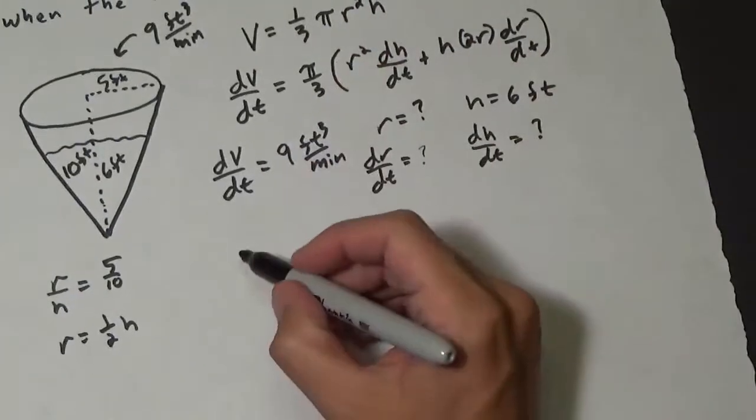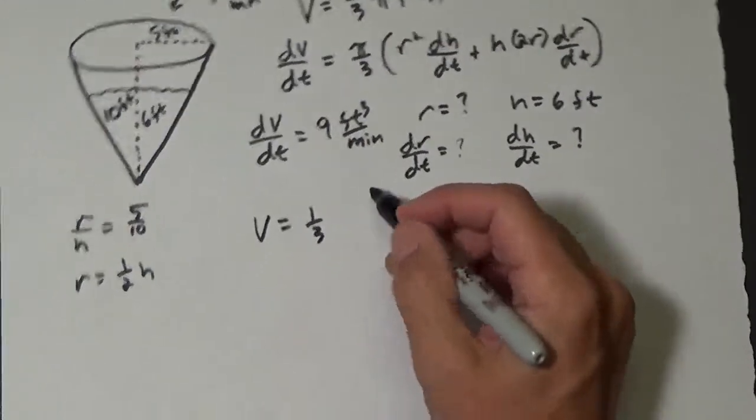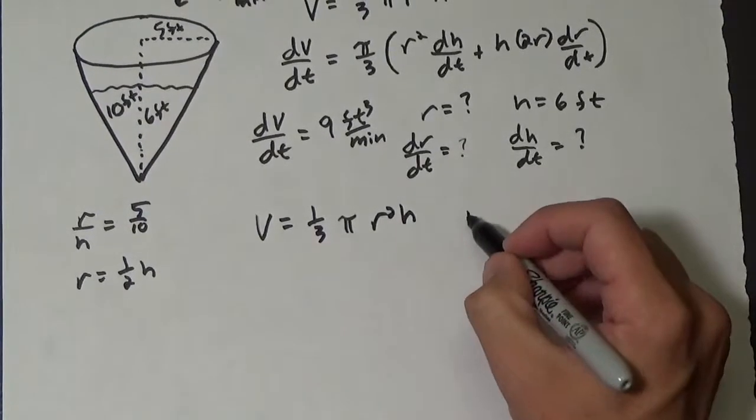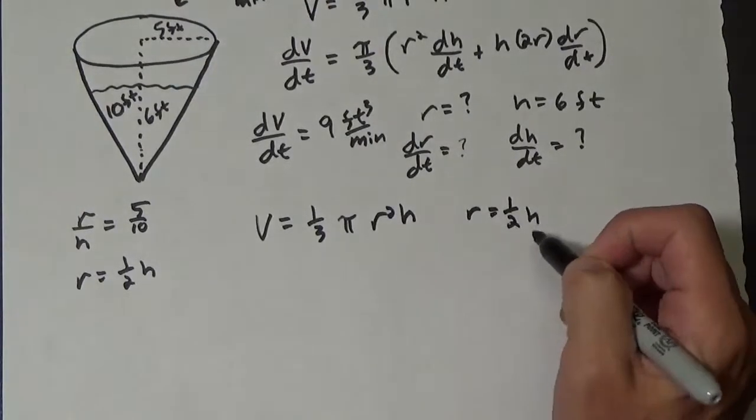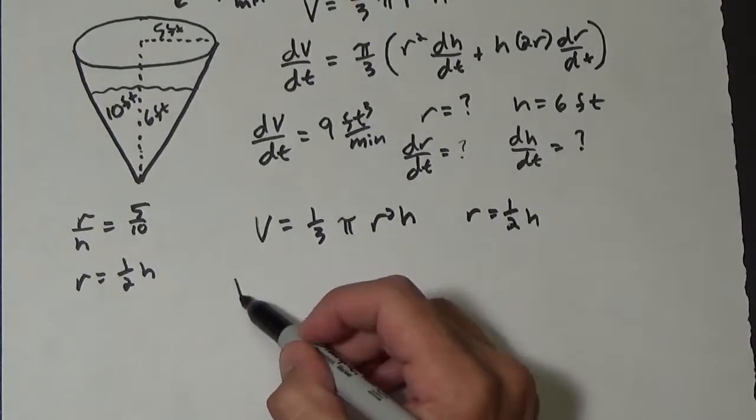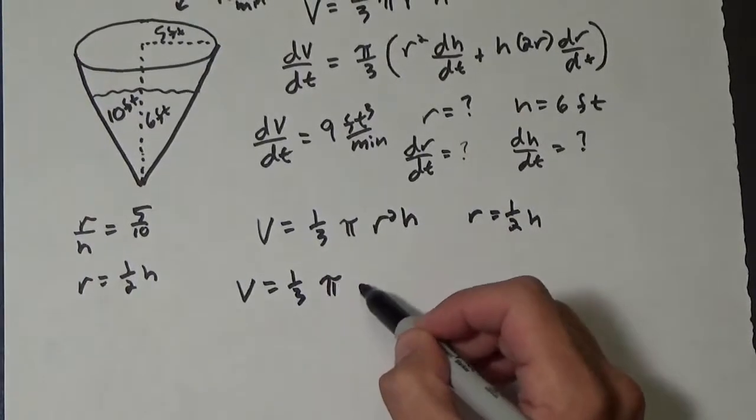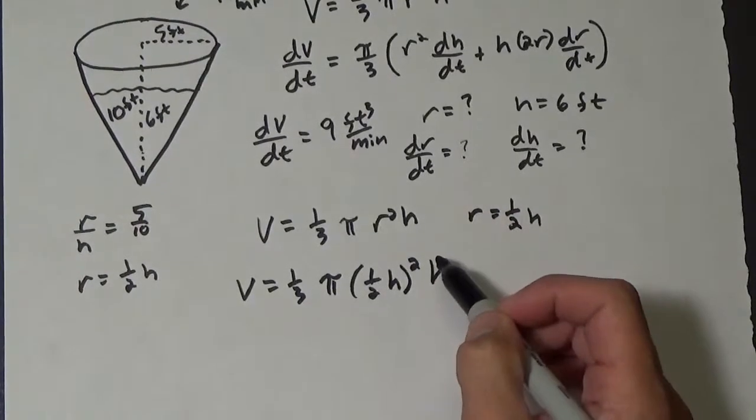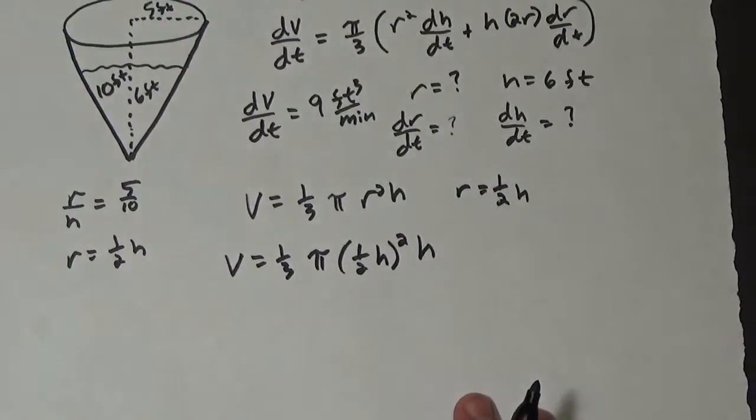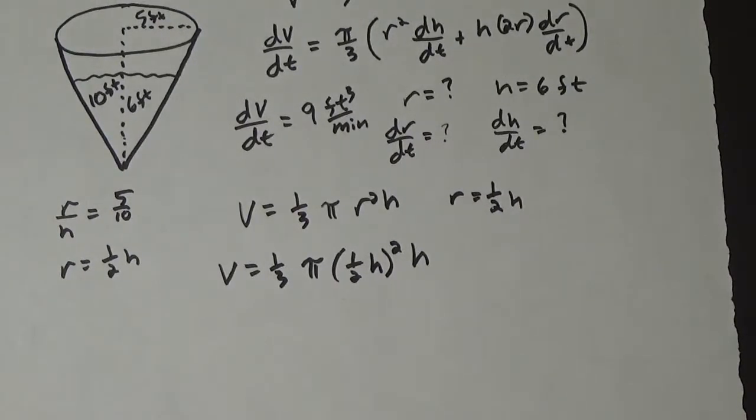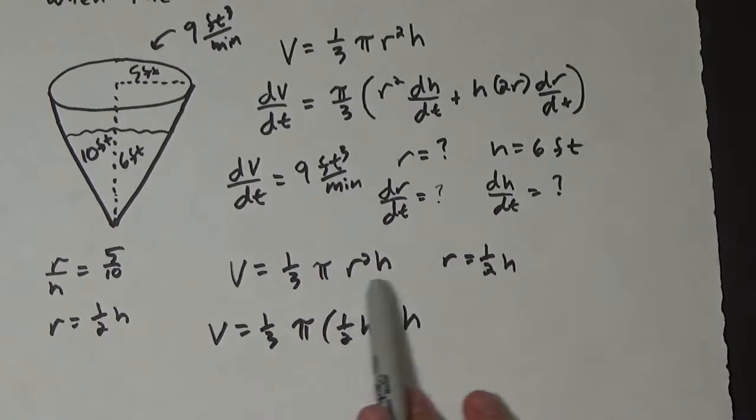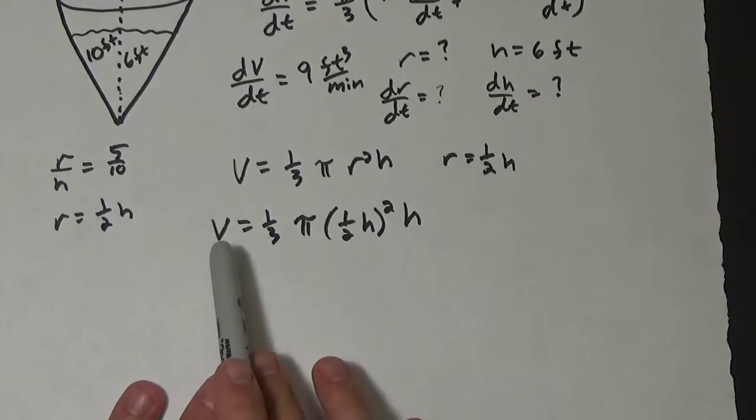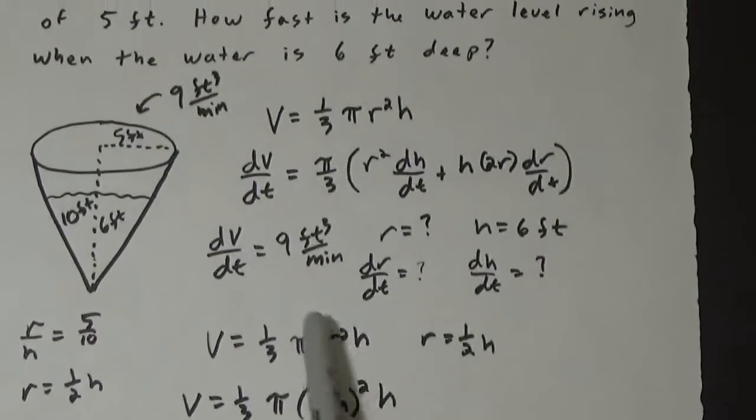Okay, so we're gonna end up, so if our original volume is 1 third pi r squared h, and we're gonna let r equal 1 half h. So now we have a volume of 1 third pi times 1 half h squared times h. And so what we've done is instead of having an equation that's based off of v, r, and h, we now have an equation or formula that's based off of just v and h.